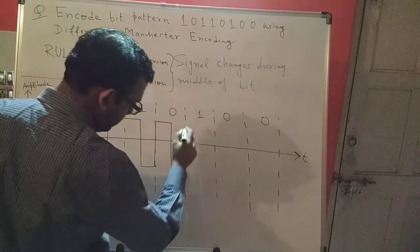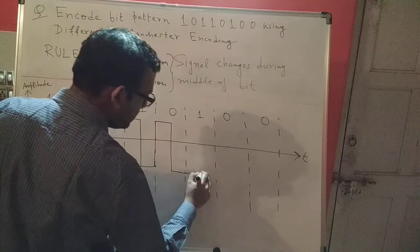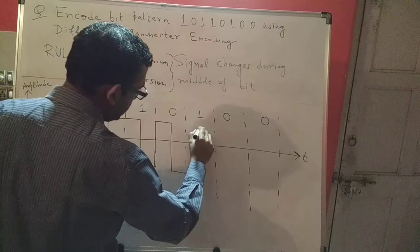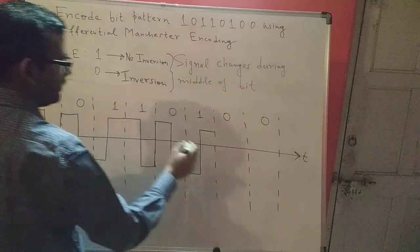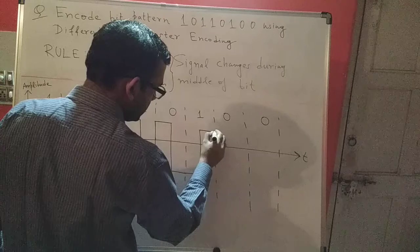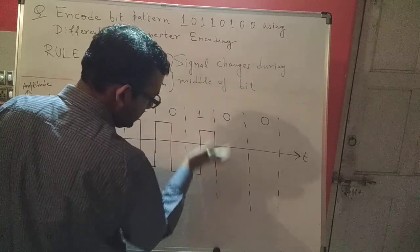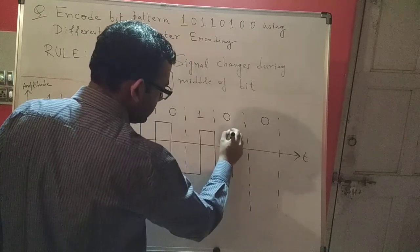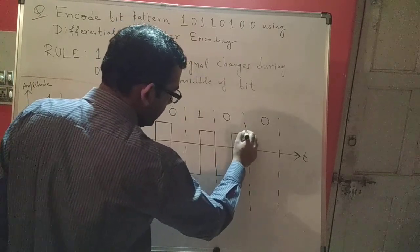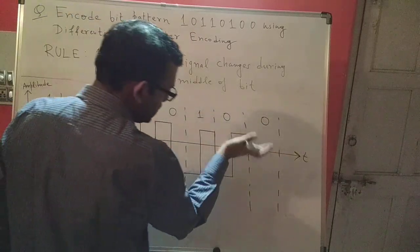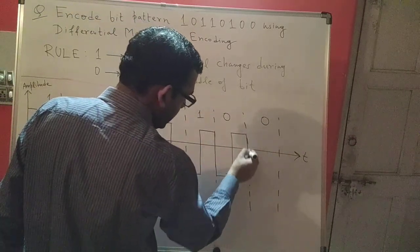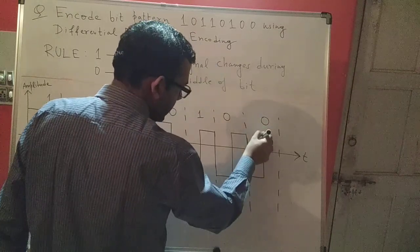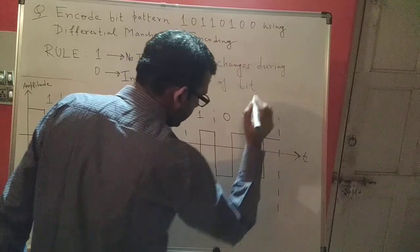One represents no inversion, so if I'm below the time axis I'll remain below the time axis. I'm at the middle of the bit, so the signal will change and I'll proceed. Zero represents inversion — I am above the time axis, so I'll go down because the signal is inverting. I'll stay there and again the signal will change during the middle of the bit. Again there is a zero; zero represents inversion, so if I'm above the time axis I'll go down. I'm at the middle of the bit, so I change the signal and end it off.